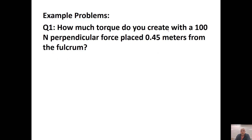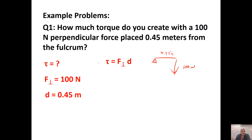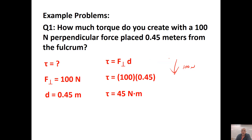How much torque do you create with a 100-newton perpendicular force placed 0.45 meters from the fulcrum? You have 0.45 meters away and 100 newtons perpendicular. Using the torque equation — torque equals perpendicular force times distance — if they don't tell you otherwise, assume it's perpendicular. Plugging in: 100 times 0.45 gives us 45 newton-meters. Make sure you remember newton-meters as your unit for torque.